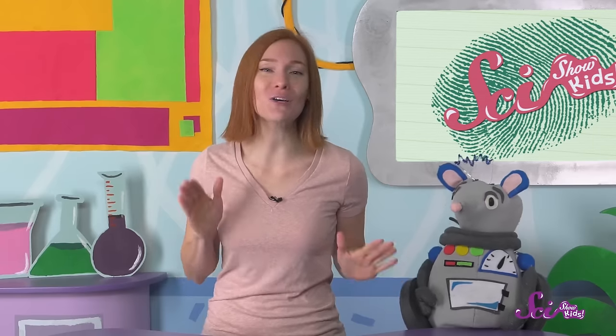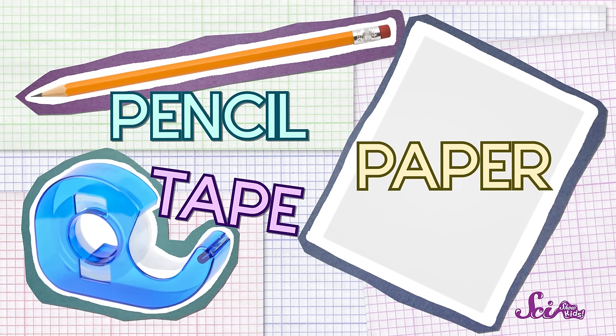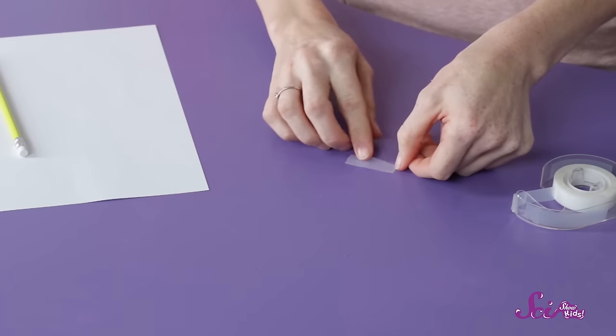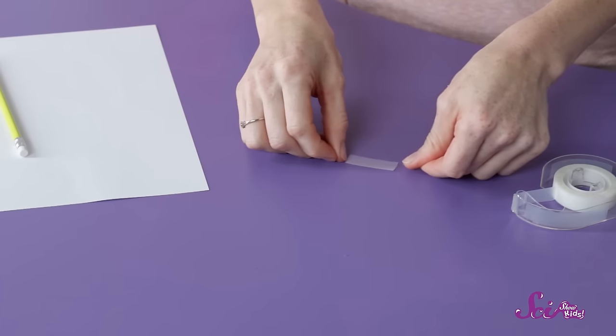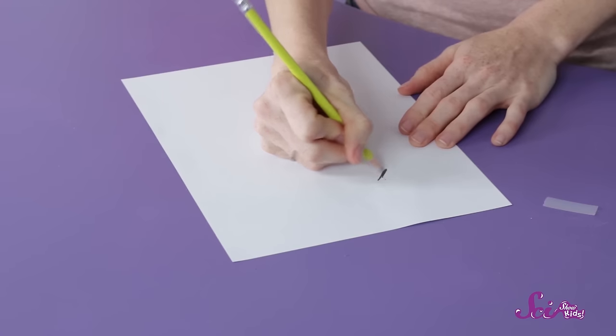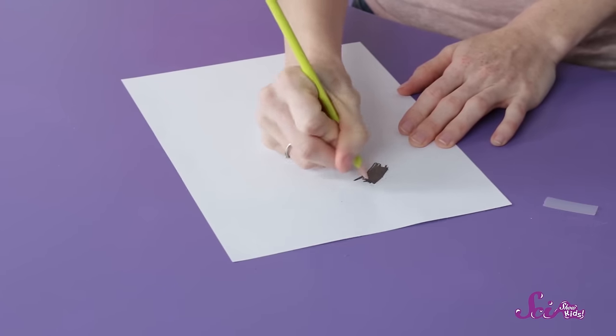You can see this for yourself! All you need to check out one of your own fingerprints is a pencil, a piece of white paper, and some clear tape. First, tear off a piece of tape. It doesn't have to be too big, just enough to cover the tip of your finger. Put the tape on the table so that the sticky side is up. Then, use the pencil to make a nice dark spot on the paper. Make it really dark!